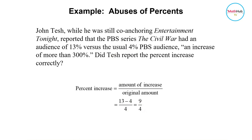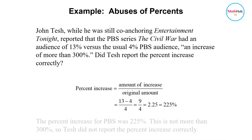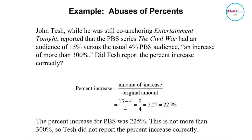You have 9 over 4, which is equal to 2.25. Multiply that by 100 and you get 225 percent. So is the increase from 4 to 13 percent really 300 percent? No, it's just 225 percent. Therefore, Tesh did not report the percent increase correctly.